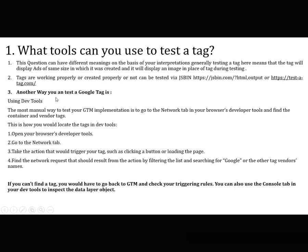Another way to test a tag is using browser Dev Tools. The most manual way to test your GTM implementation is to go to the Network tab in your browser's developer tools and find the container and vendor tags. Open developer tools, go to the Network tab, take the action that would trigger your tag such as clicking a button or loading the page, then find the network request by filtering and searching for Google or the other tag vendor's name. If you can't find the tag, go back to Google Tag Manager and check your triggering rules. You can also use the Console tab in Dev Tools to inspect the data layer object.